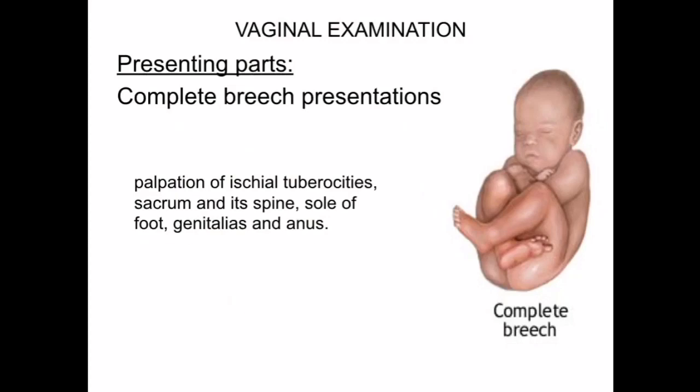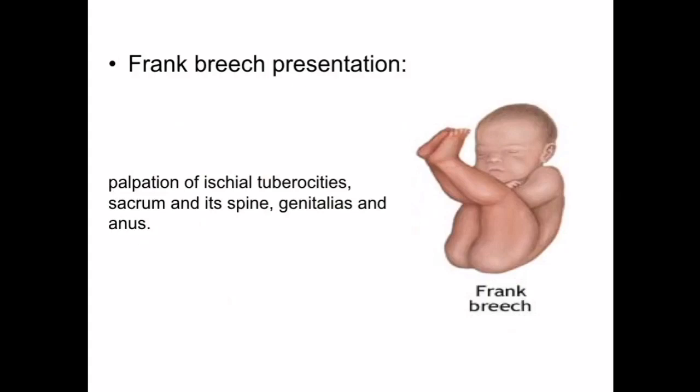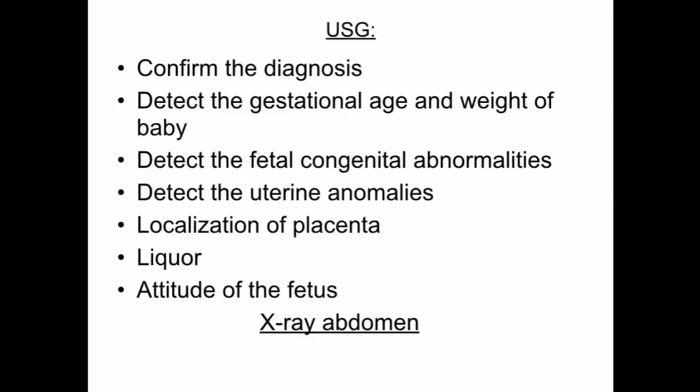On vaginal examination, the presenting parts of complete breech allow palpation of the ischial tuberosities, sacrum and spine, and genitalia and anus. In frank breech presentation, you can palpate the ischial tuberosities, sacrum and its spine, and genitalia and anus. For footling presentation, you can palpate the sole of the foot.